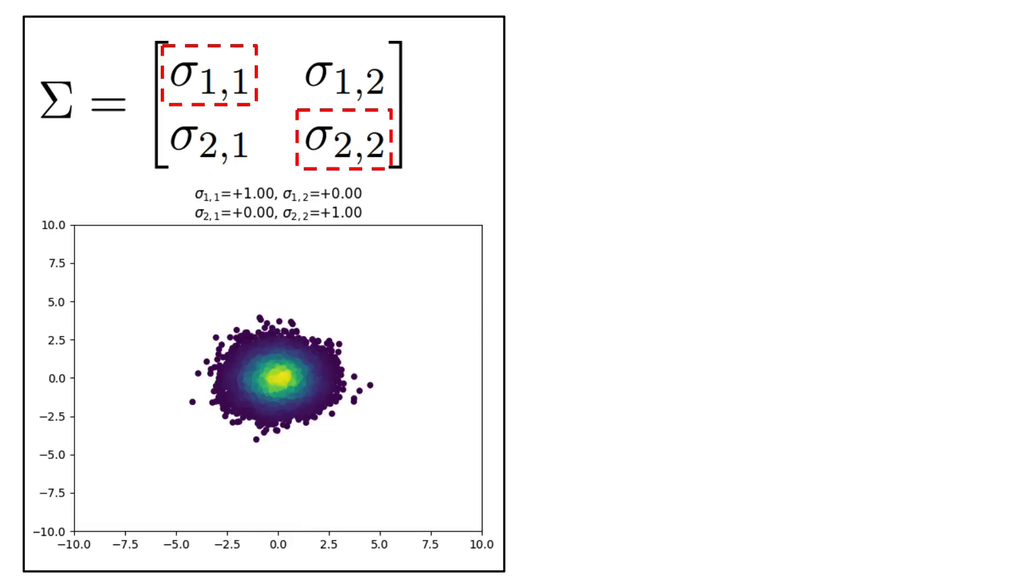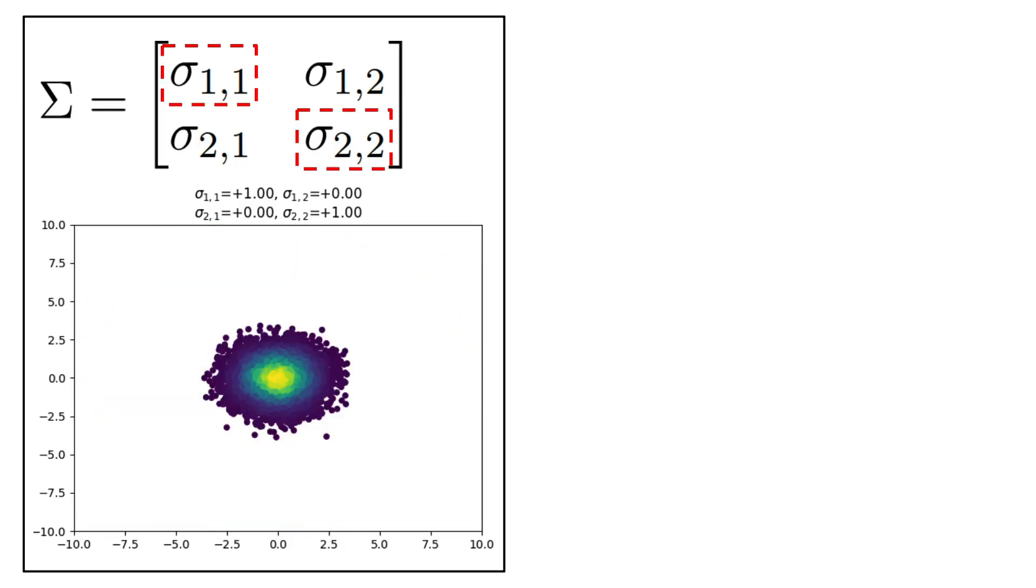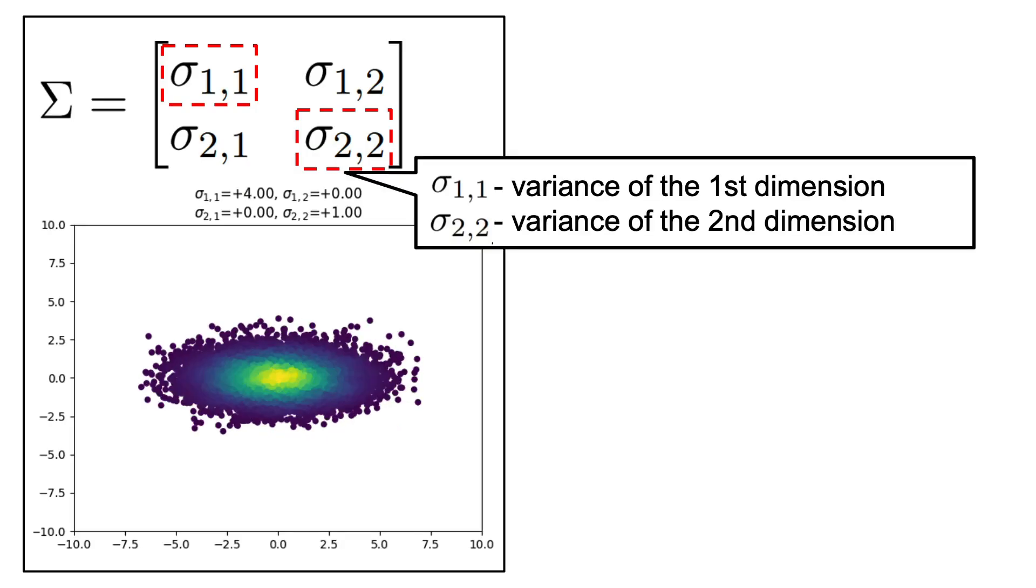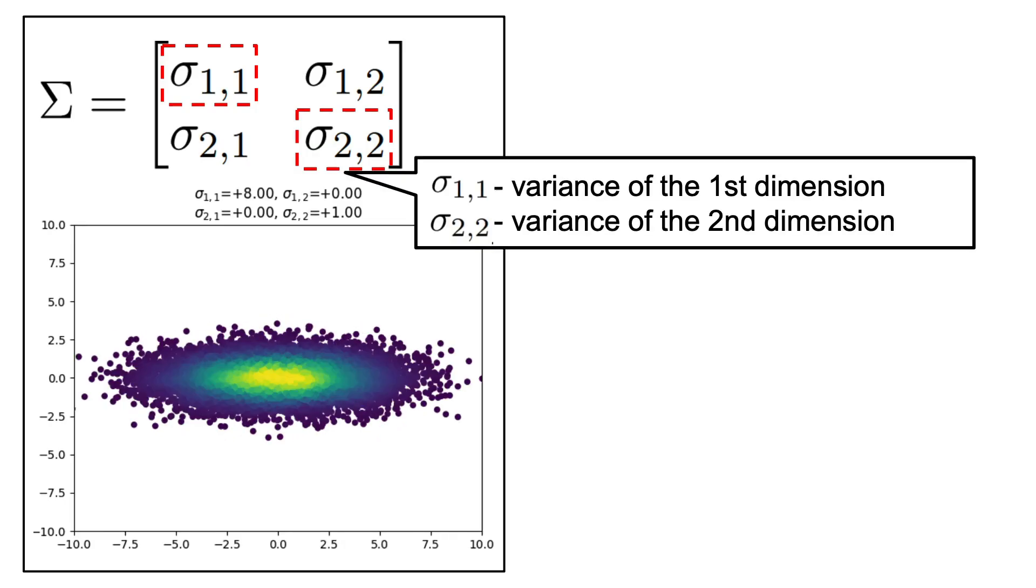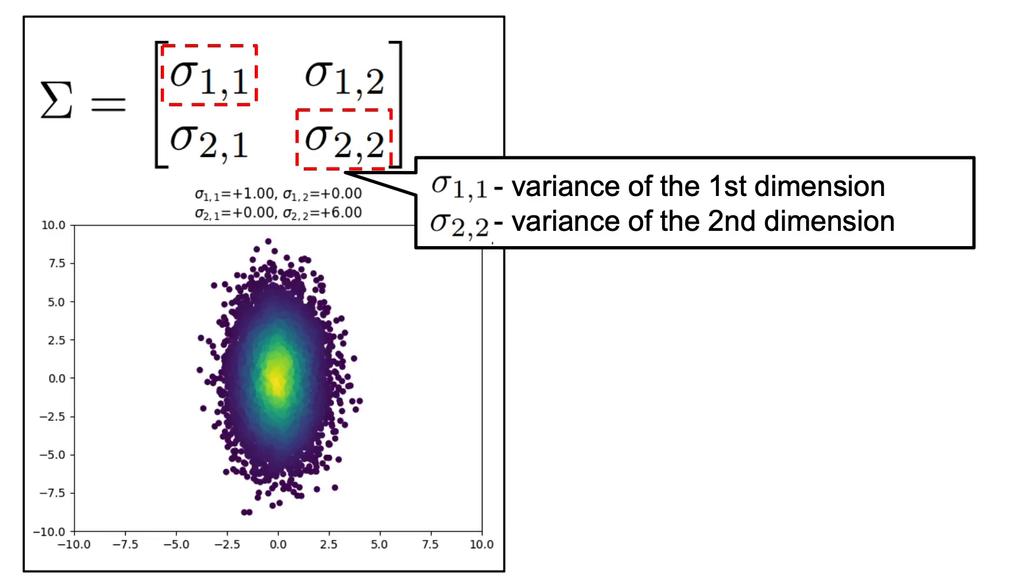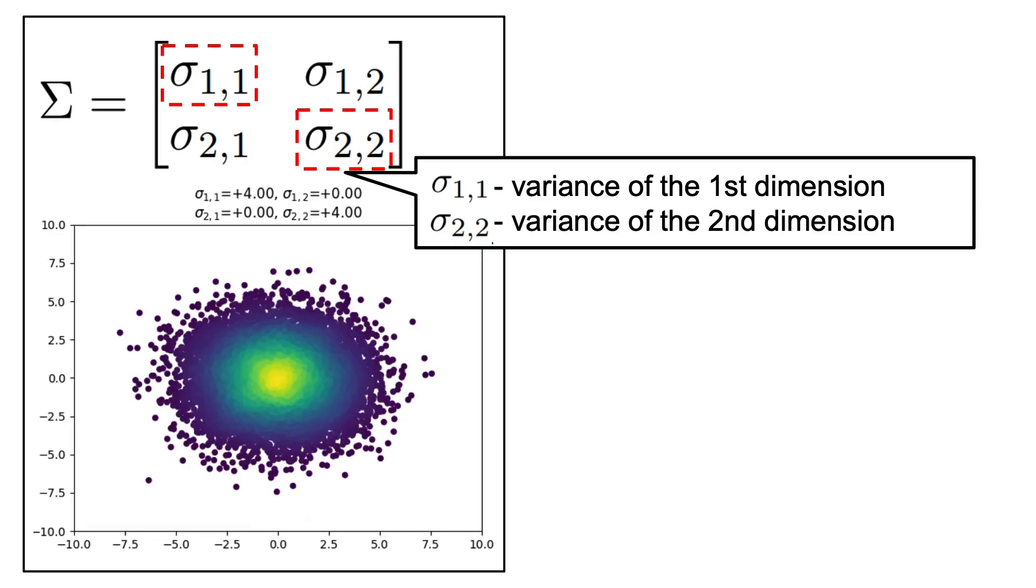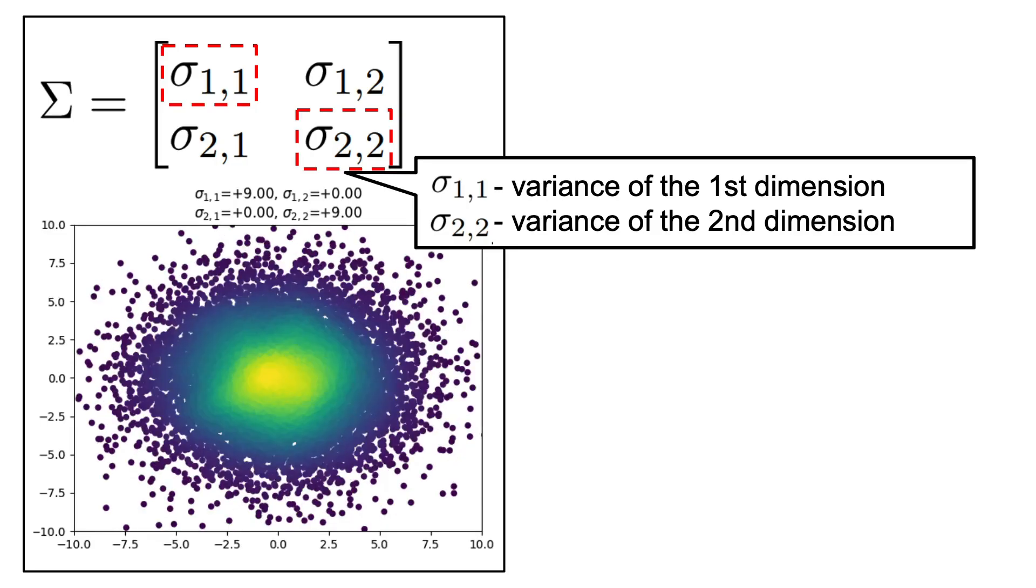When these variances are large, it means that the data is spread out in those dimensions. Conversely, smaller variances mean that the data is more tightly clustered around the mean in that dimension.